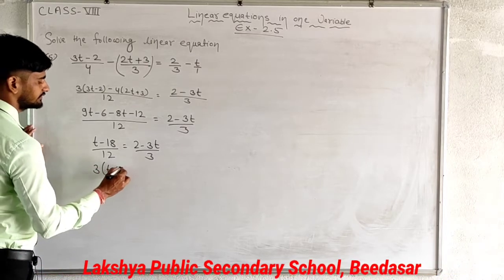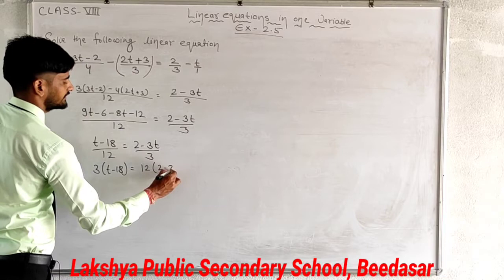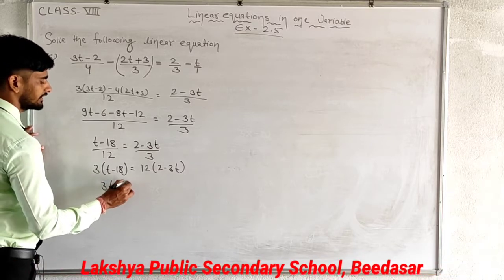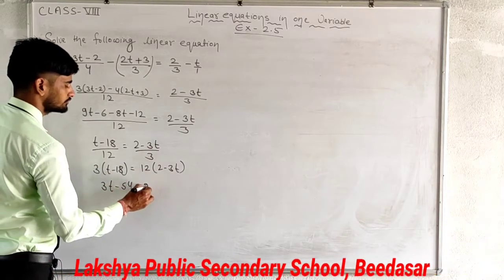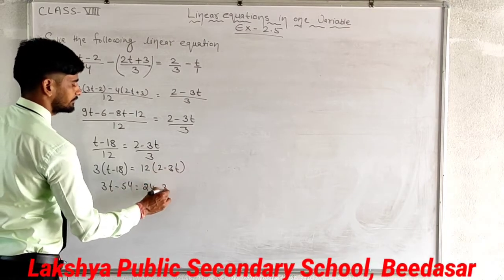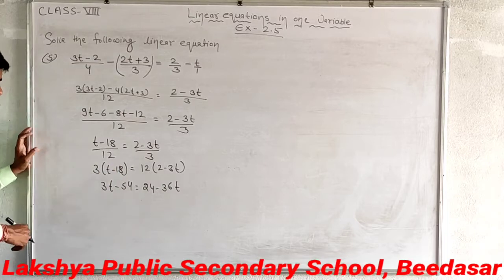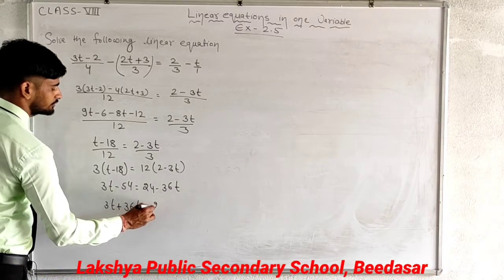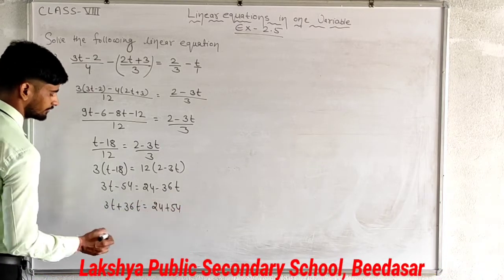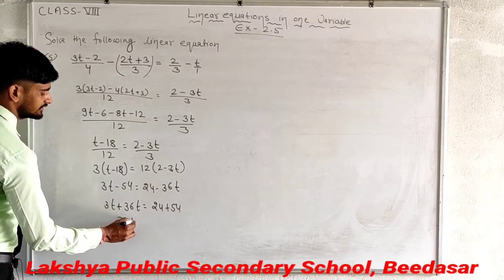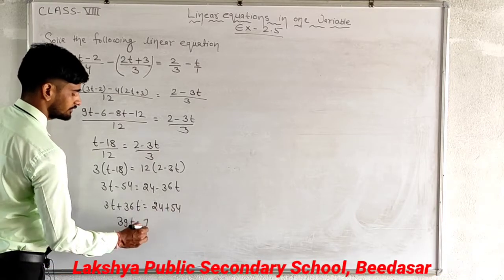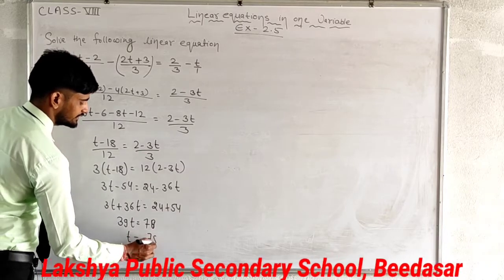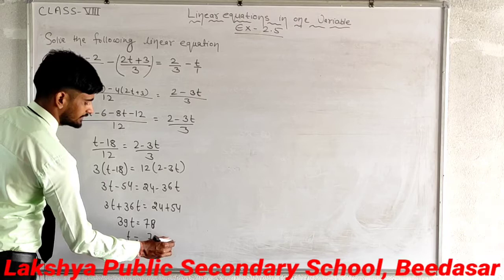Cross multiplying: 3 times (t minus 18) and 12 times (2 minus 3t). This gives 3t minus 54 equals 24 minus 36t. Separating variables: 3t plus 36t equals 24 plus 54, so 39t equals 78. Therefore t equals 78 upon 39, and the value of t is 2.